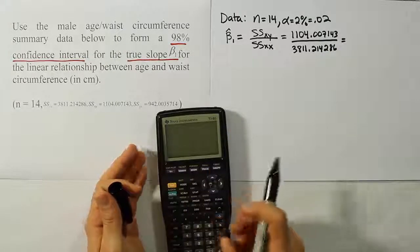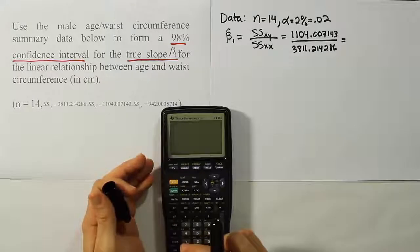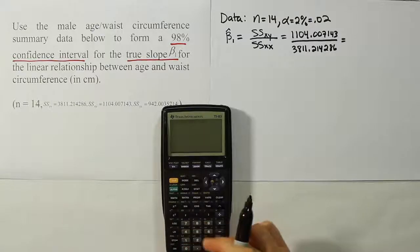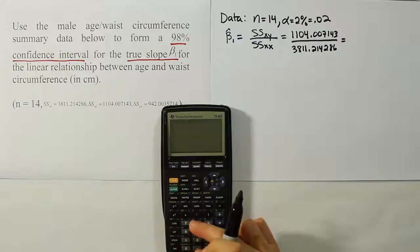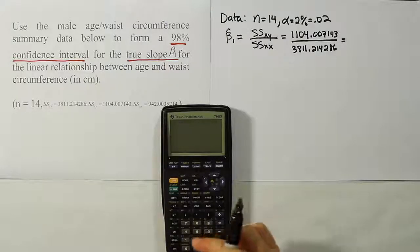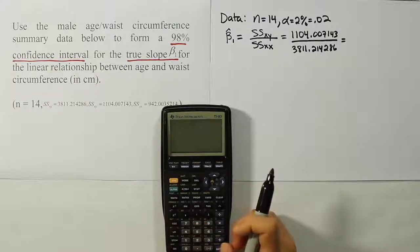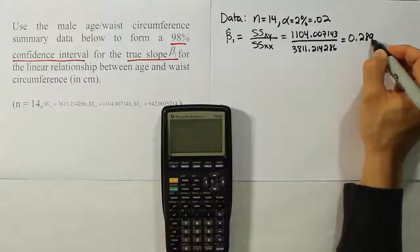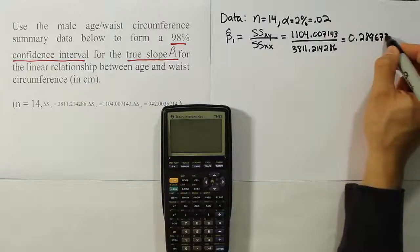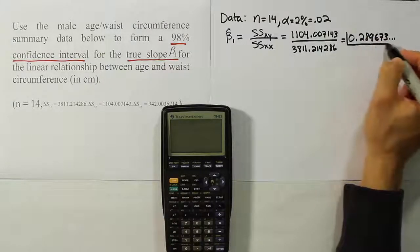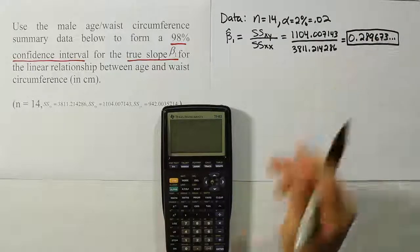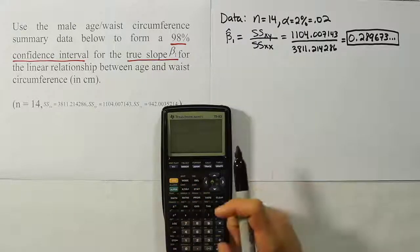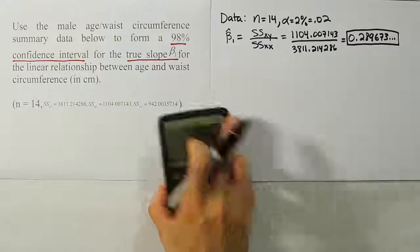After doing the division, we get the answer 0.289673. Let me quickly calculate that for us. We'll have 1,104.007143 divided by 3811.214286, and we get the answer 0.289673. Let's highlight this value because we're going to need that later. I'm going to actually store that value in my calculator under the letter B, since we're using it for beta1 hat.